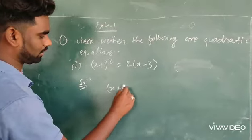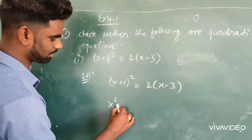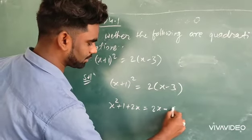(x+1)² = 2(x-3). So, x² + 1 + 2x = 2x - 6.